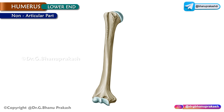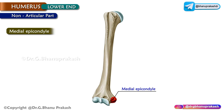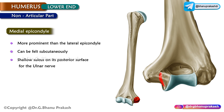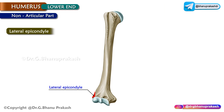The non-articular part includes the medial epicondyle, a blunt projection situated on the medial side of the lower end. It is more prominent than the lateral epicondyle and can be felt subcutaneously. It presents with a shallow sulcus on its posterior surface for the ulnar nerve. The lateral epicondyle is a projection on the lateral side of the lower end.